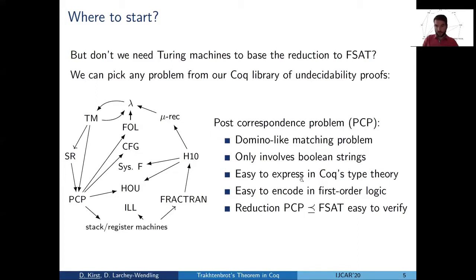At last year's CPP, when we considered the general decision problem, which is this arrow here in the graph, we used PCP for the encoding. So in our work, we just have to verify a reduction from PCP. And that's much more easy than doing this for Turing machines.